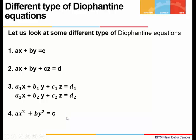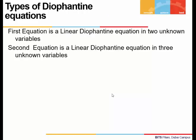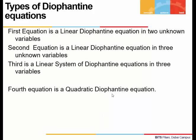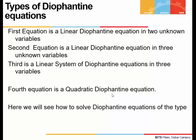The fourth equation is a Diophantine equation where the x and y variables have some power, so this type is called a quadratic Diophantine equation. To summarize: the first was a linear Diophantine equation in two unknowns, the second was linear in three unknowns, the third was a linear system with three variables and two equations, and the fourth was a quadratic Diophantine equation.